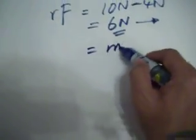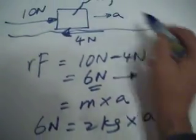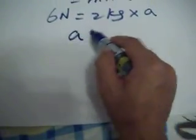Okay, now if we apply this equation, resultant force equals MA. Now the mass is 2 kilogram, so 6 Newton equals 2 kilogram times A, which means that the box will move to the right with an acceleration of 6 divided by 2, which is 3 meter per second squared.